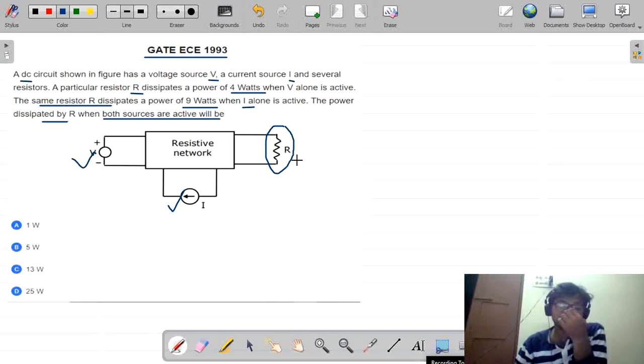See, if they have asked about current or voltages, we can add up by using algebraic equation. Like I equals I1 plus I2, V equals V1 plus V2. Because current and voltages, we can add algebraically.